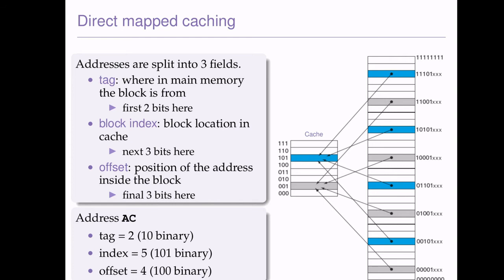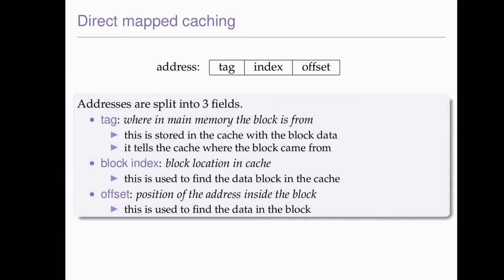It's useful to have an idea of how this decomposes: the offset comes last (least significant bits), then the block index, and the most significant bits are the tag. The tag tells us where in memory the block is from — it's stored in the cache with the block data, but tells the cache where the block came from. So a tag might just represent, say, BA, and then we know in main memory this came from a memory location that started with BA.